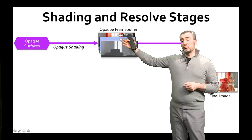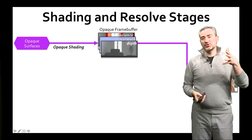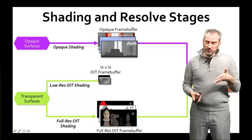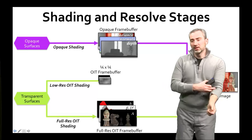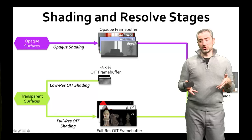For the actual shading, opaque surfaces go through a regular forward plus or G-buffer shading pass, producing an output image as well as normals and depth values. The transparent surfaces are then routed in two ways. Low-resolution surfaces such as particles, where there may be many to process quickly, can run at quarter resolution or lower and go into an order-dependent frame buffer.